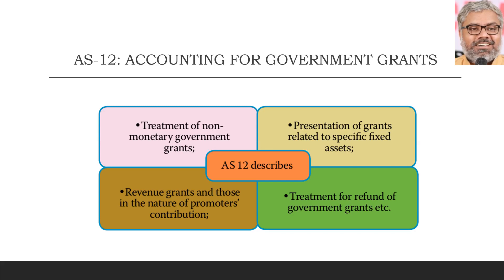For example, if a particular organization is going to invest 10 crores in a backward area, the government may say: 'I will give you 20% of that as my contribution.' That is a capital grant which can be used for establishing a new entity. The government did not specify which particular asset to purchase — this grant is not a revenue grant, but is in the nature of promoters' contribution, neither related to a specific fixed asset. We can call it a generic capital grant.